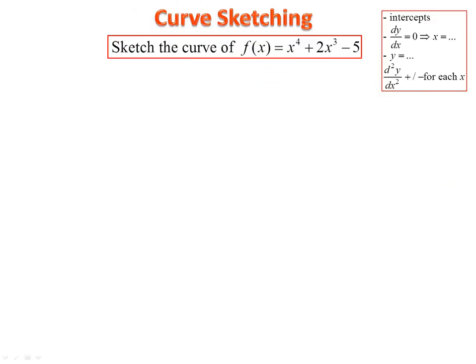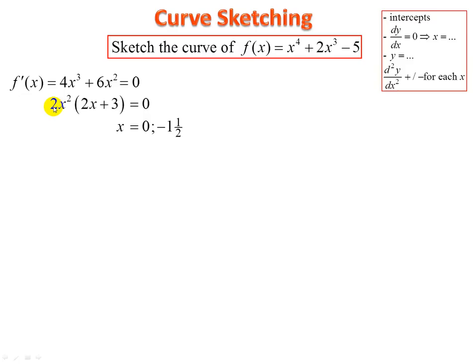Here's another one for you to try — pause and try it yourself. First, find the derivative: 4x cubed plus 6x squared. Equate to zero — take out a common factor of 2x squared. That gives x equals zero, and from the other factor, x equals negative 3 over 2, or negative 1.5. Substitute into the original: y equals negative 5 at x equals zero, and y equals negative 6.7 at x equals negative 1.5.